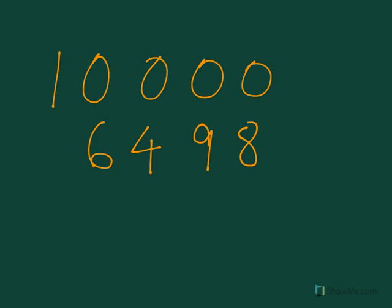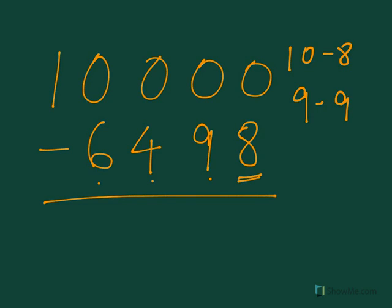Now let's take one big number like 10,000, and we will subtract 6498 from it. So the same process: the first number, the number at one's place, will get subtracted from 10, and all other numbers will get subtracted from 9.